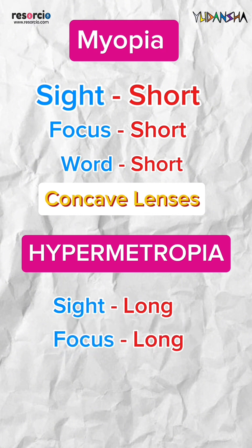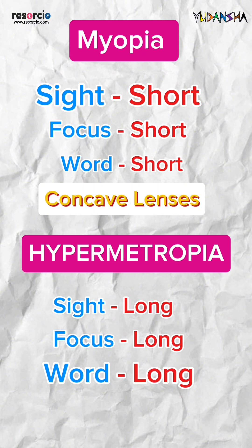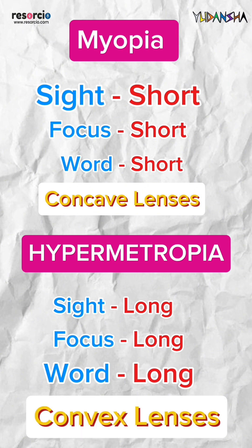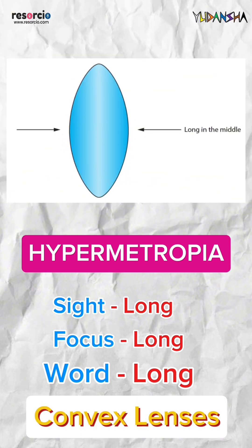In a hypermetropic eye, the focus is long, forming behind the retina instead of on it. The word hypermetropia is long, with 12 letters compared to the short term myopia. Convex lenses, which are long in the middle, are used to correct hypermetropia.